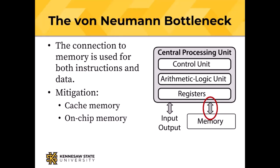We put some memory on the CPU chip itself. It turns out that when a program is executing, generally only a small part of the code is needed at any given instant. We can make a split cache — one that holds data in one place and instructions in another — or something called the Harvard architecture, which has two memories and two sets of connections between the CPU and memory: one for data and one for instructions.